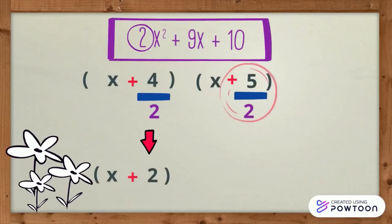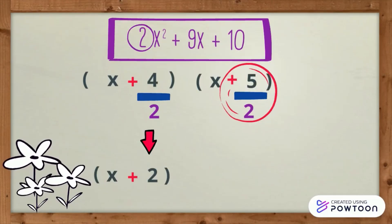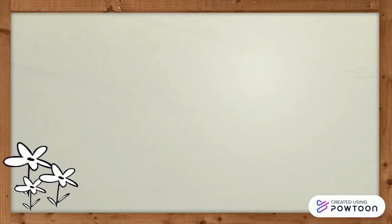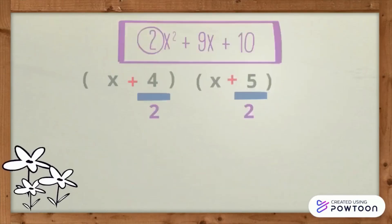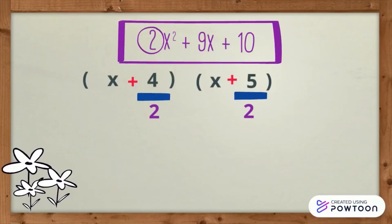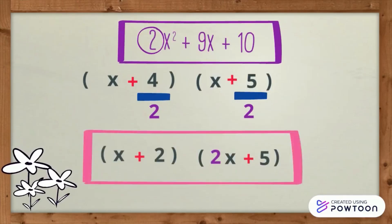5 is not divisible by 2. To eliminate the denominator, we simply multiply or distribute 2 to both terms, or simply write 2 in front of x. The complete factors of 2x squared plus 9x plus 10 are the quantity x plus 2 times the quantity 2x plus 5.